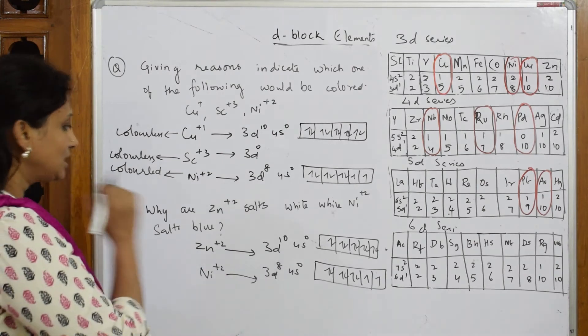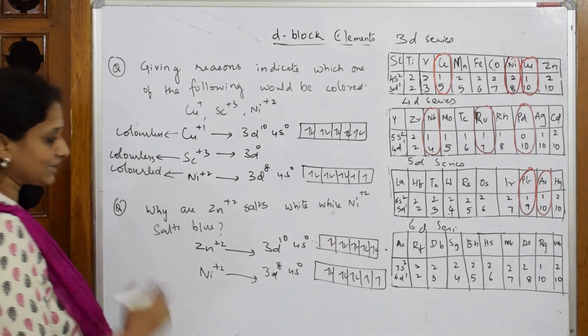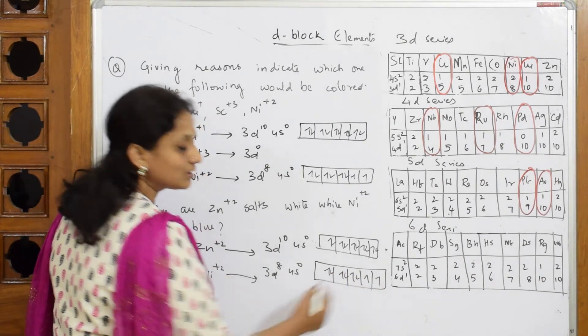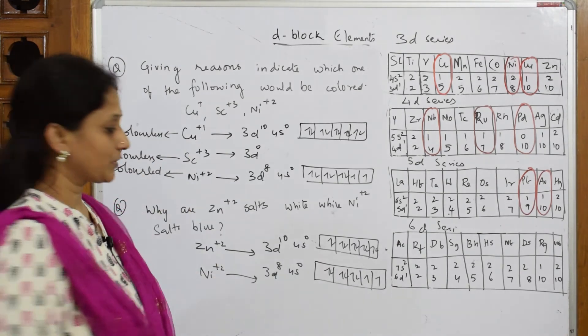Now I'll show what is d-d transition from this. Because of these unpaired electrons it is blue in color. Now when I speak about d, yes, this whole set is called d degenerate, which has same energy.